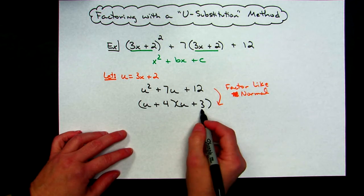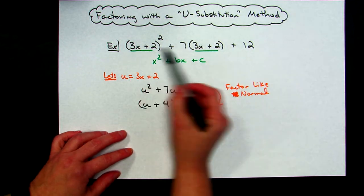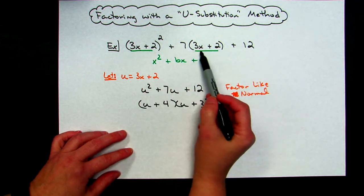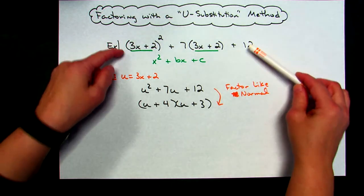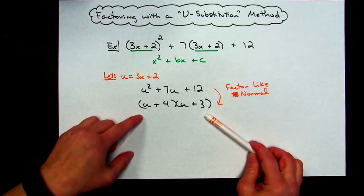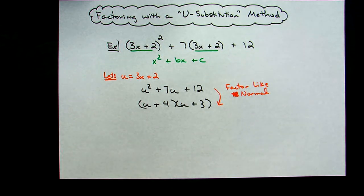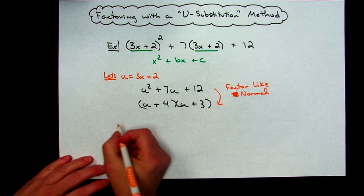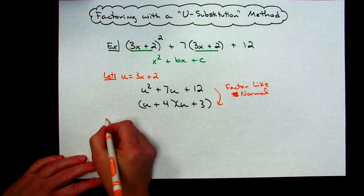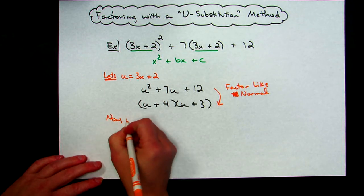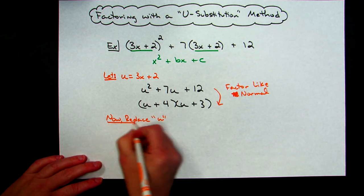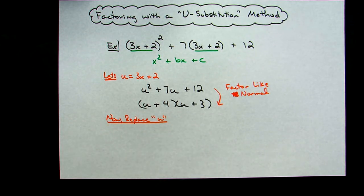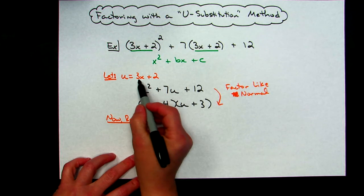So then I've factored it now and I didn't have to deal with this great big long complicated thing, I didn't have to deal with those 3x minus 2's. However now eventually I do, I can't leave it there. The original problem was in terms of x, this is in terms of u, so I need to now replace the u with what I originally let it equal so that my problem can get back in terms of x. So let's put here, let's put now replace u.